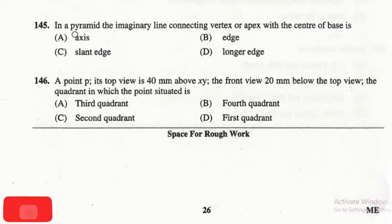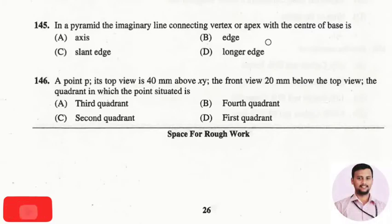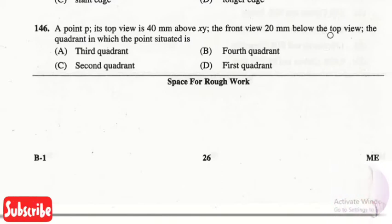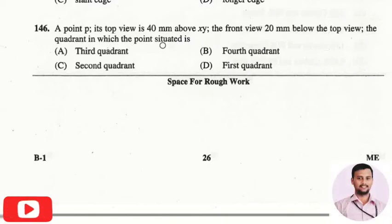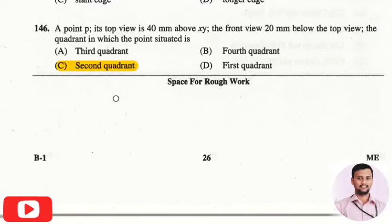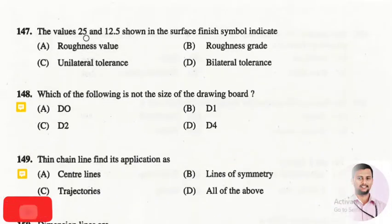The next question is: in a pyramid, the imaginary line connecting the vertex or apex with the center of the base is? The right answer is option one, that is axis. The next question is: a point P — its top view is 40 mm above XY, the front view is 20 mm below the top view — the quadrant in which the point is situated? The right answer is option three, that is the second quadrant.